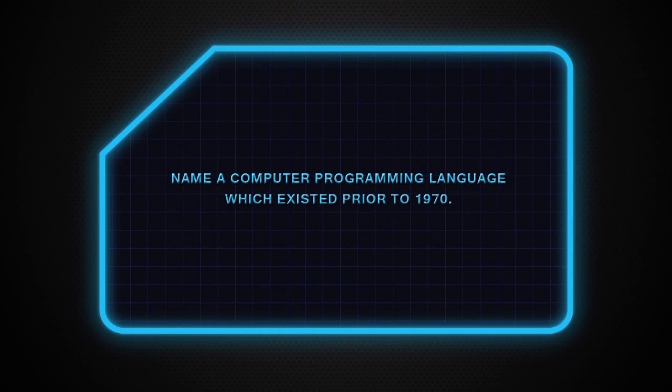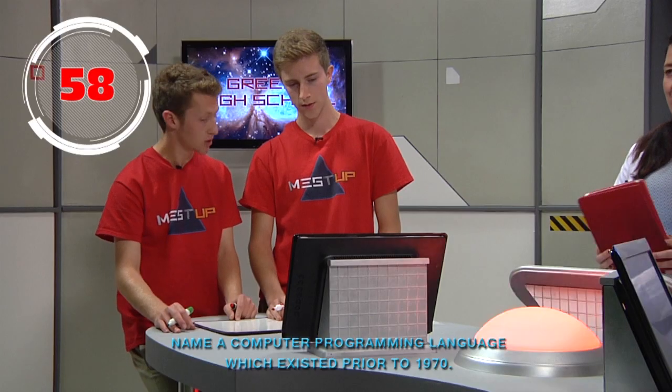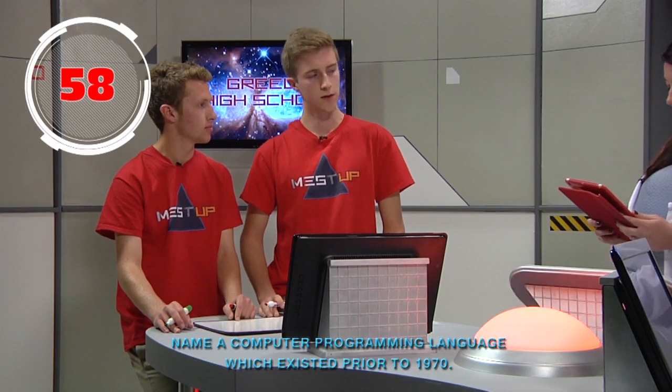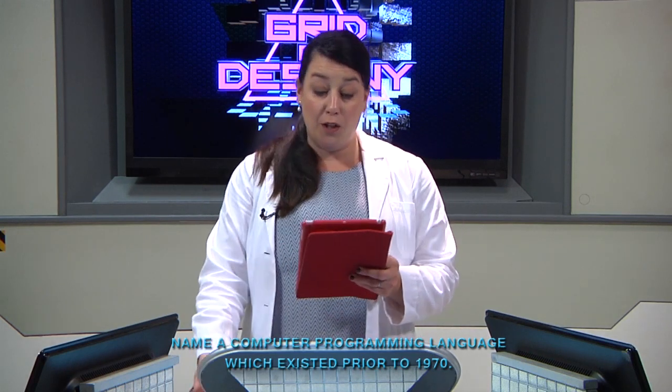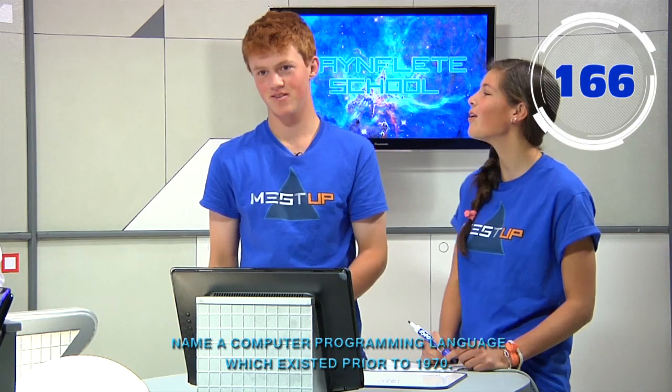Technology 25. Name a computer programming language which existed prior to 1970. Red team answers binary — incorrect. Blue team answers Python — also incorrect. Some of the most commonly known ones are Logo, Fortran, Basic, and Cobol.